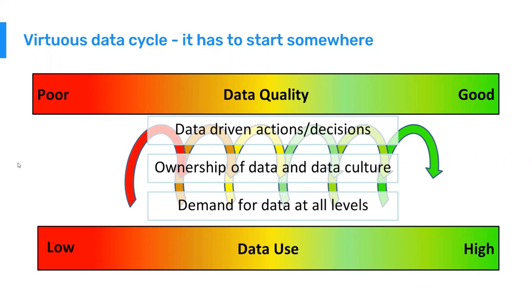It's important to revisit the virtuous data cycle: data quality and data use are connected. High data quality enables high data use, and vice versa. The question becomes where to start — do you try to force data use or data quality? Both can be done at the same time. We can take steps to improve data quality while also taking measures to improve data use, such as adding feedback mechanisms and sending alerts and notifications. They typically go hand in hand.